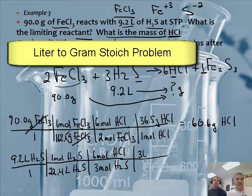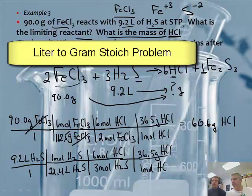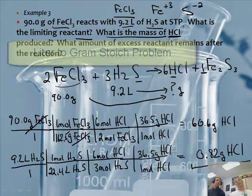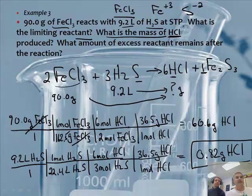Then we say 6 moles of HCl is equal to 3 moles of H₂S. And we use 36.5 grams of HCl per 1 mole of HCl. And that gives us 0.82 grams of HCl.